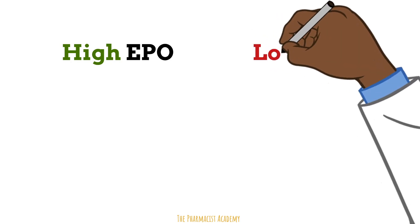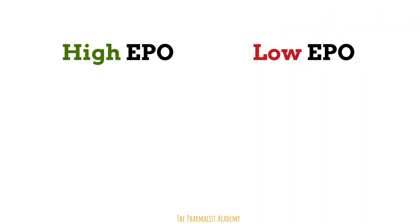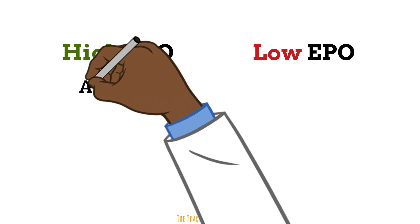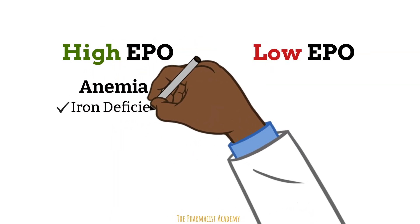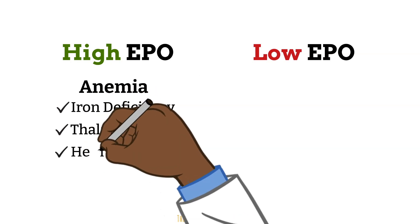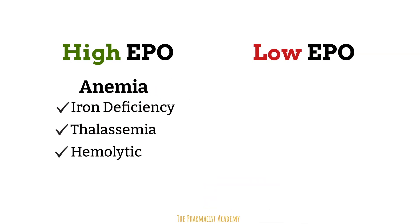On the left side, we have high EPO levels and conditions associated with them. High levels of EPO are seen in situations with decreased blood oxygen levels. These conditions include various types of anemia: iron deficiency anemia, anemia due to thalassemia, and hemolytic anemia. In iron deficiency anemia, there's low iron, which leads to low hemoglobin and low red blood cell production, so the body compensates by amping up the EPO levels to tell the bone marrow to make red blood cells.